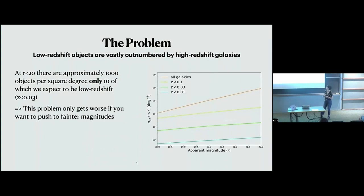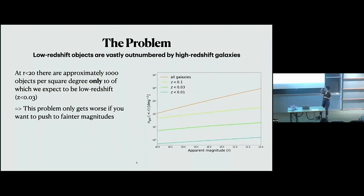The problem is that low redshift objects are vastly outnumbered by higher redshift galaxies. At an apparent magnitude of less than 20, there are approximately 1,000 objects per square degree, and we really only expect about 10 of them to be low redshift. I'm going to call low redshift as z less than 0.03 — you can pick your favorite number between about 0.01 and 0.1 depending on what you're interested in. Only 10 out of 1,000 objects are expected at this lower redshift, and this only gets worse at fainter magnitudes where you get even more dwarfed by higher redshift objects.